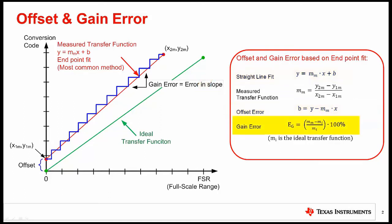The gain error is the percentage difference between the ideal slope and the measured slope. The gain error and offset error are often referred to as DC errors, as they can be measured with DC input signals applied.